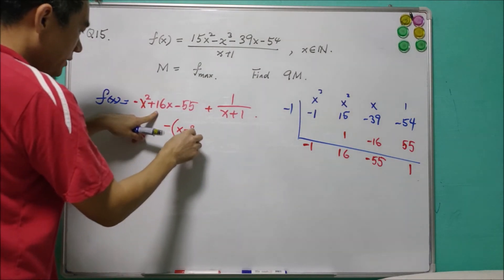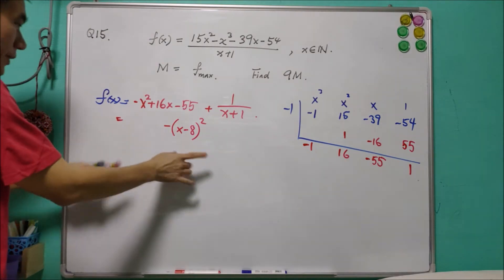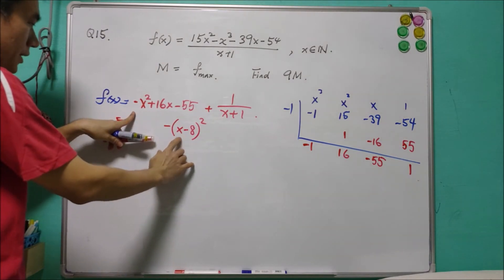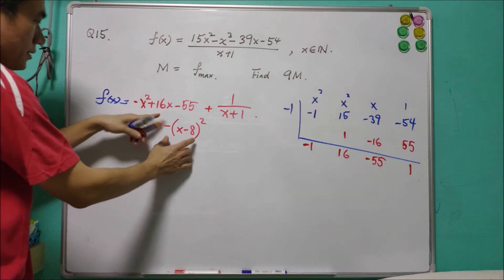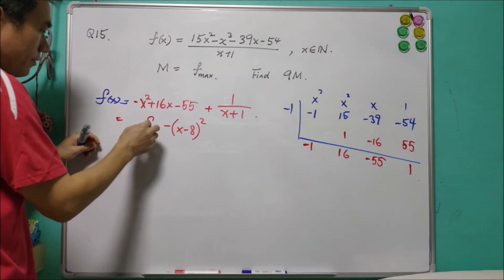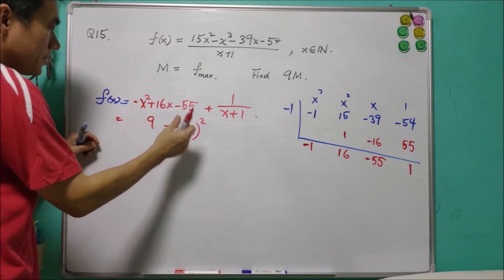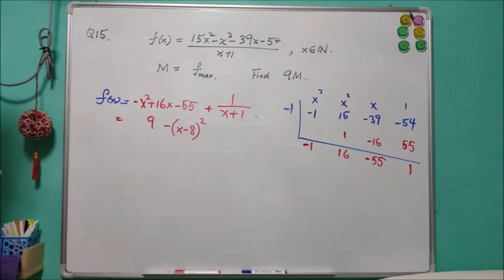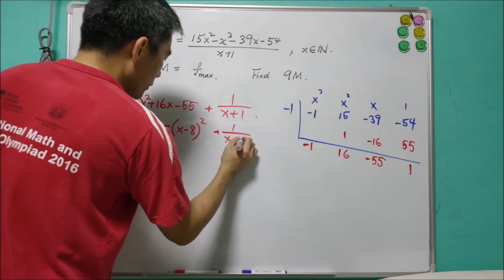This is negative, so I can put a negative here: x minus 8 in square. When I expand this, this is negative x squared. This is plus 16, and this is minus 64. So I need to have a 9. 9 minus 64 is equal to negative 55. And this is plus 1 over x plus 1.